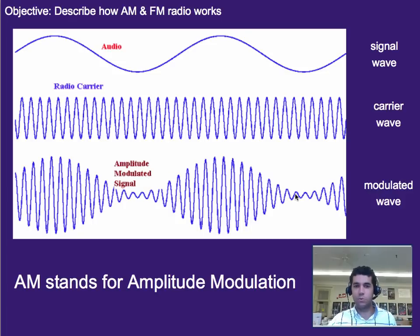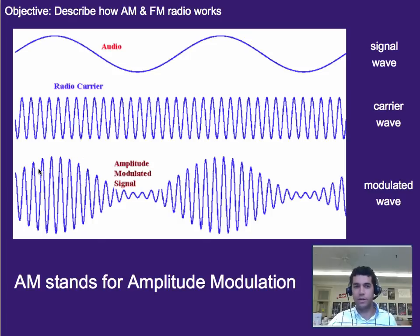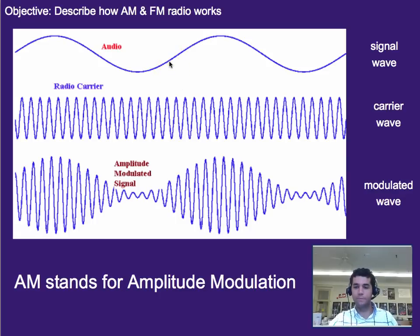That's where the information is sent out. On the receiving end, instead of looking at the frequency of the carrier — it just uses that to tune in — it measures whether the amplitude is going up, going down, or staying constant, and that determines what the audio signal is doing. That's what amplitude modulation is.